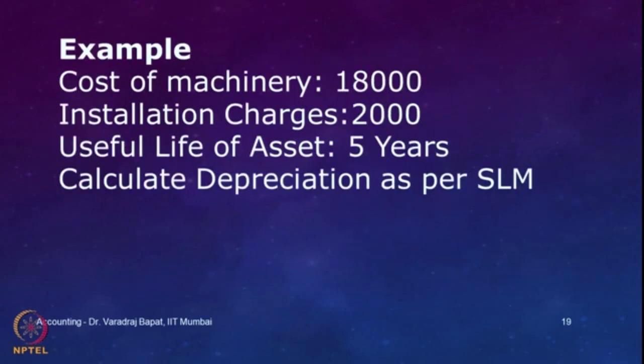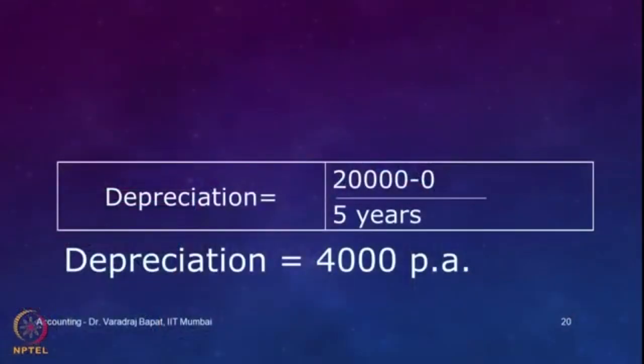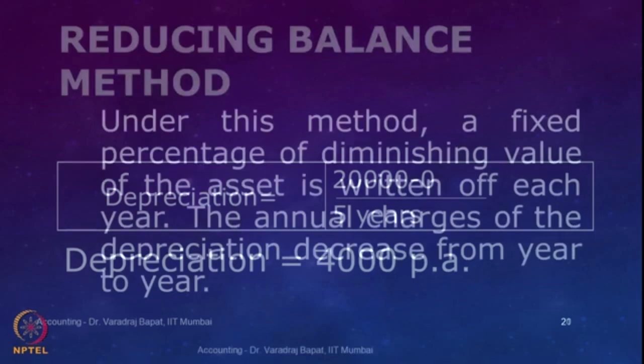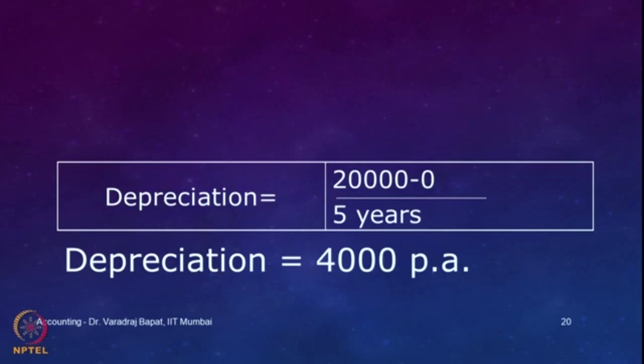Here is an example — cost of machinery is 18,000, installation charges are 2,000, useful life is 5 years, and scrap value is assumed to be 0. Total cost is 18,000 plus 2,000 equals 20,000, to be written off over 5 years — so 20,000 divided by 5 gives 4,000 per annum as the depreciation. Very simple — everybody should be able to calculate it.